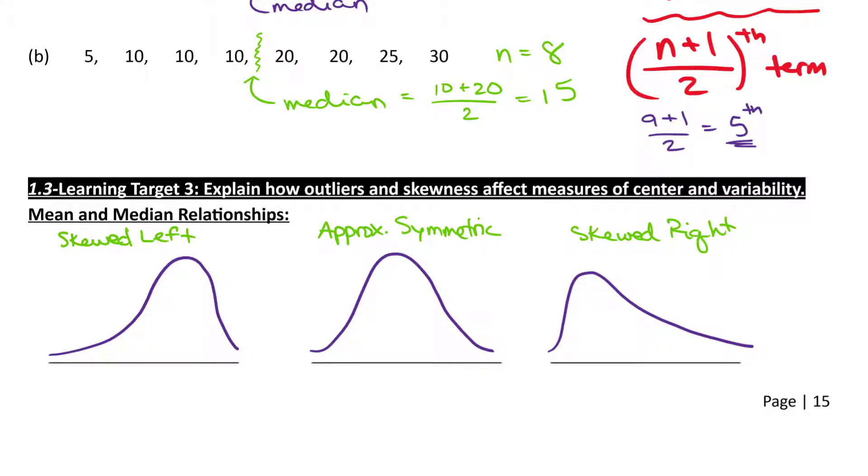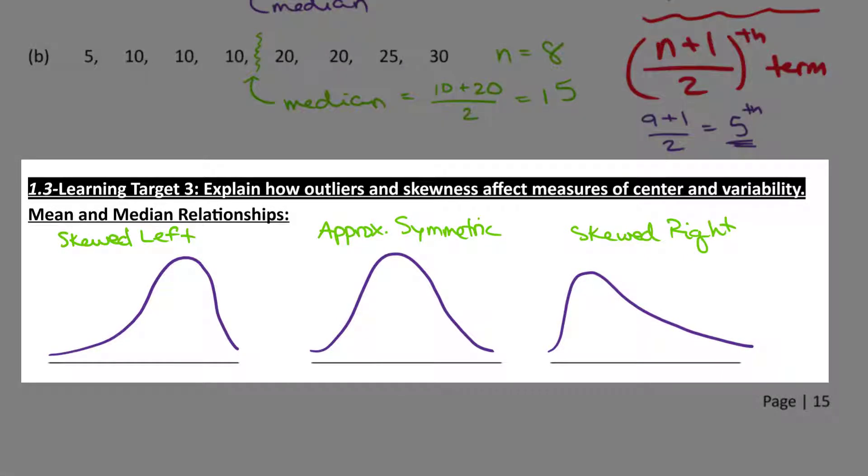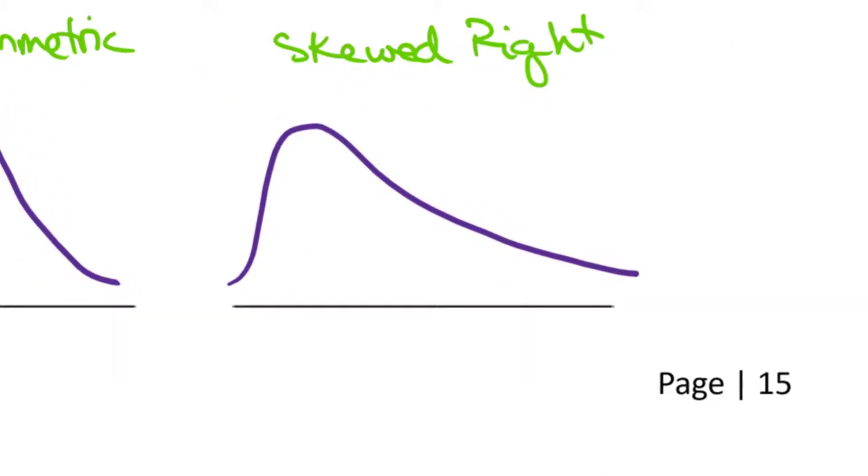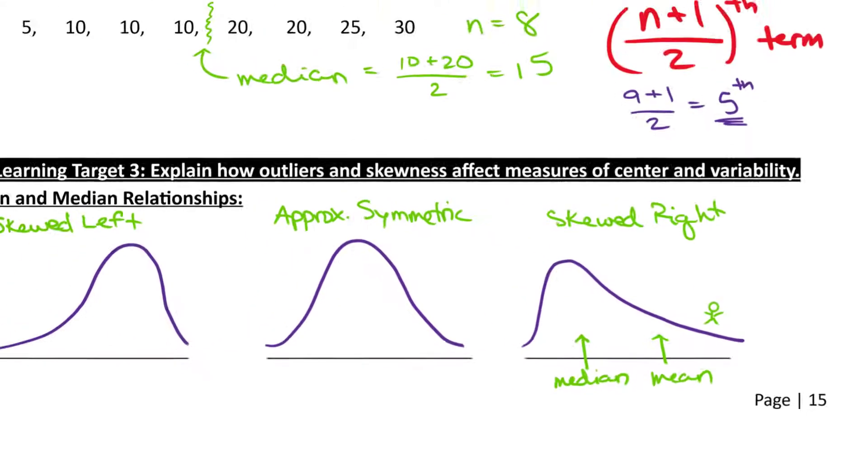Learning target number 3 summarizes that idea. We need to explain how outliers and skewness affect measures of center and variability. We'll get to the variability later. Today we're just focusing on the mean-median relationship. So you can see we have the three general distributions: skewed left, approximately symmetric, and skewed right. With our skewed right distribution, this is our Jeff Bezos distribution. Our median will be that middle value. So about half of the area is below, half the area is above. But here's Jeff. So our mean is going to get pulled to the right. And that's always going to be the case. Your mean always gets pulled in the direction of the extreme values, the direction of the skewness, the direction of outliers, things like that.